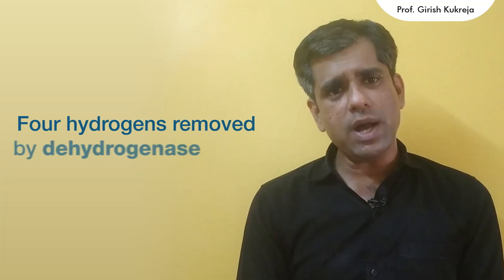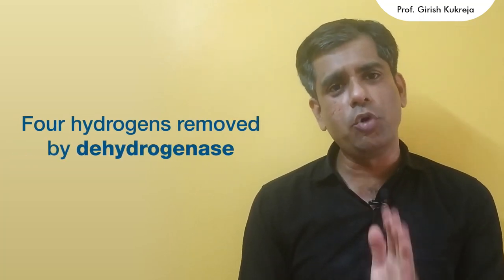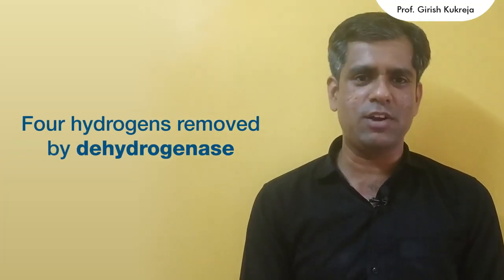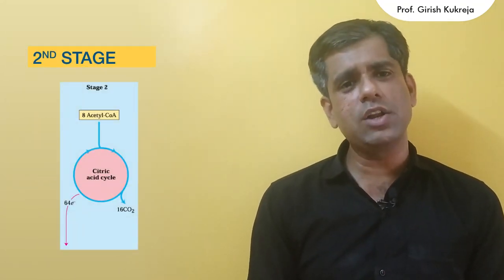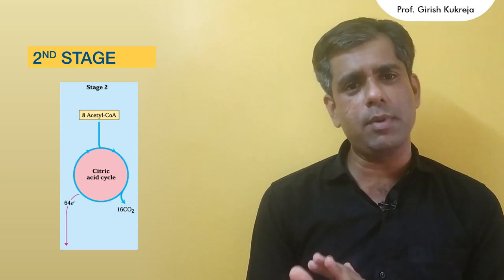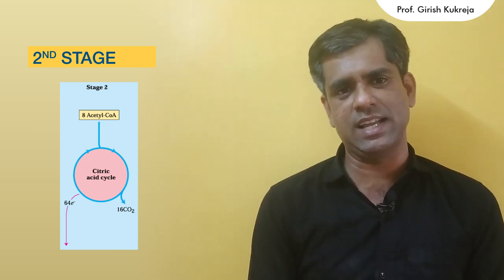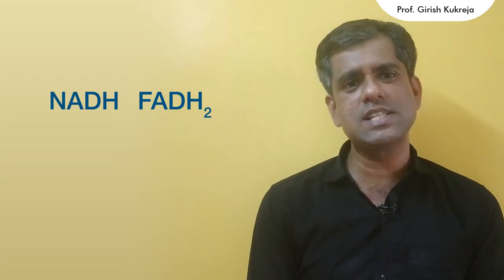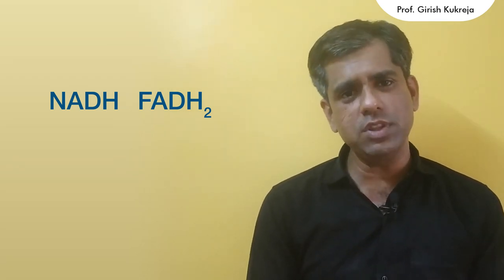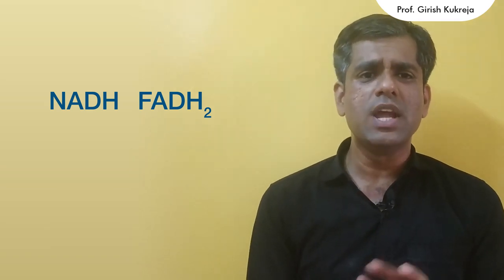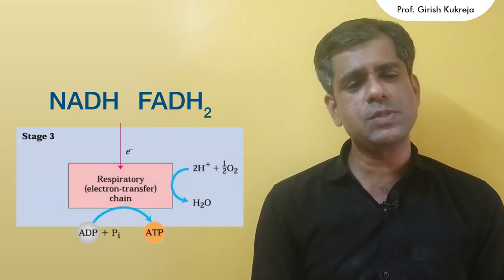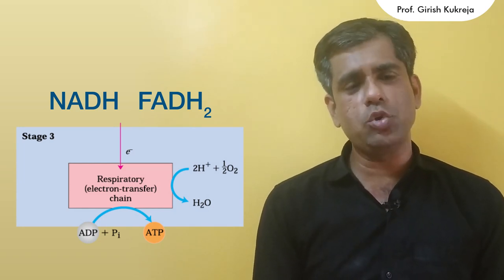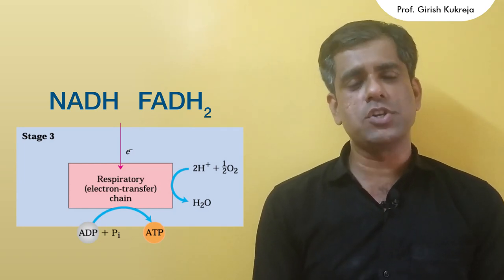In each pass of beta oxidation there is removal of four hydrogen atoms by dehydrogenases. In the second stage the acetyl-CoA molecule undergoes complete oxidation to carbon dioxide via the citric acid cycle. The NADH and FADH2, the reduced coenzymes which are produced in both these stages, that is stage 1 of beta oxidation and stage 2 of citric acid cycle, now enter the respiratory electron transfer chain to undergo oxidative phosphorylation.